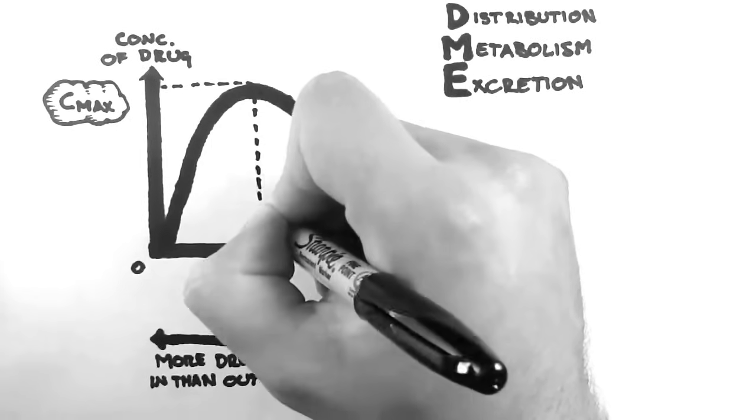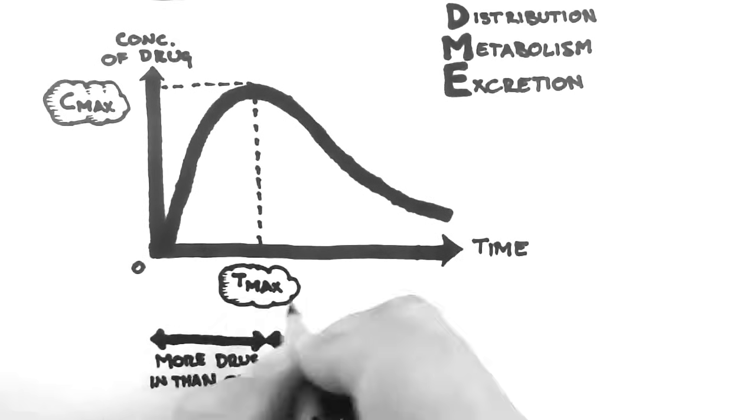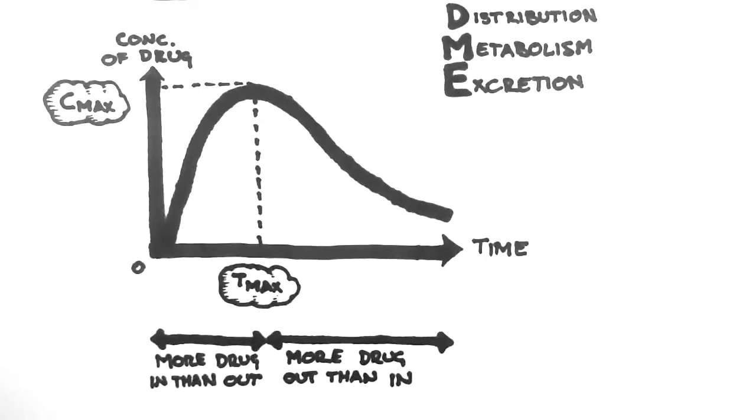The time at which the maximum concentration occurs is called Tmax. Now a slightly more confusing concept is the half-life of a drug. The half-life is, by definition, the time it takes to remove half of the current concentration of drug from the body. So let's consider the half-life on this graph.